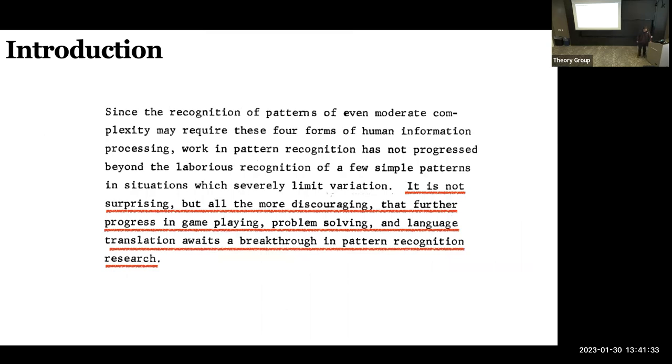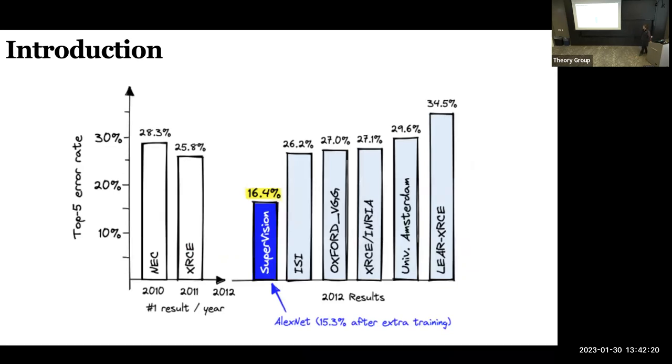He finishes his sections with a very nice statement. He says it's not surprising, but all the more discouraging for the progress in game playing, problem solving, and language translation, which are the problems people are working on now and achieving incredible success. And now a way to break through in pattern recognition research. This progress, this breakthrough has happened, although it didn't happen as a single explosion like usually happens with breakthroughs. It slowly crept up. But if I were to choose a year when it happened, the year is 2012.